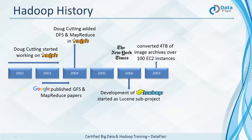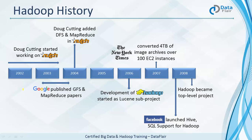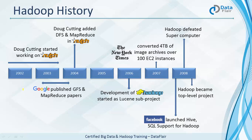When Hadoop was not even in alpha in 2007, the New York Times converted 4 TB of image archives over 100 EC2 instances. 2008 was a very big year for Hadoop. Facebook launched Hive, which provides SQL support on Hadoop. In just two years, Hadoop became a top-level project, and in the biggest news, Hadoop defeated a supercomputer in TeraSort, grabbing the industry's attention. All big players started using Hadoop — healthcare, retail, telecom all started adopting it.